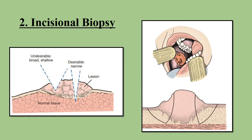Another type is incisional biopsy, used for removing a small portion of the lesion along with a small part of normal tissue. We use incisional biopsy when there is a large lesion at a risky location — meaning we can't take the whole lesion due to its size or because it is close to anatomical landmarks or structures. We take from the lateral border or lateral area of the lesion, because the central area is often necrotic tissue. The deeper the sample, the better.